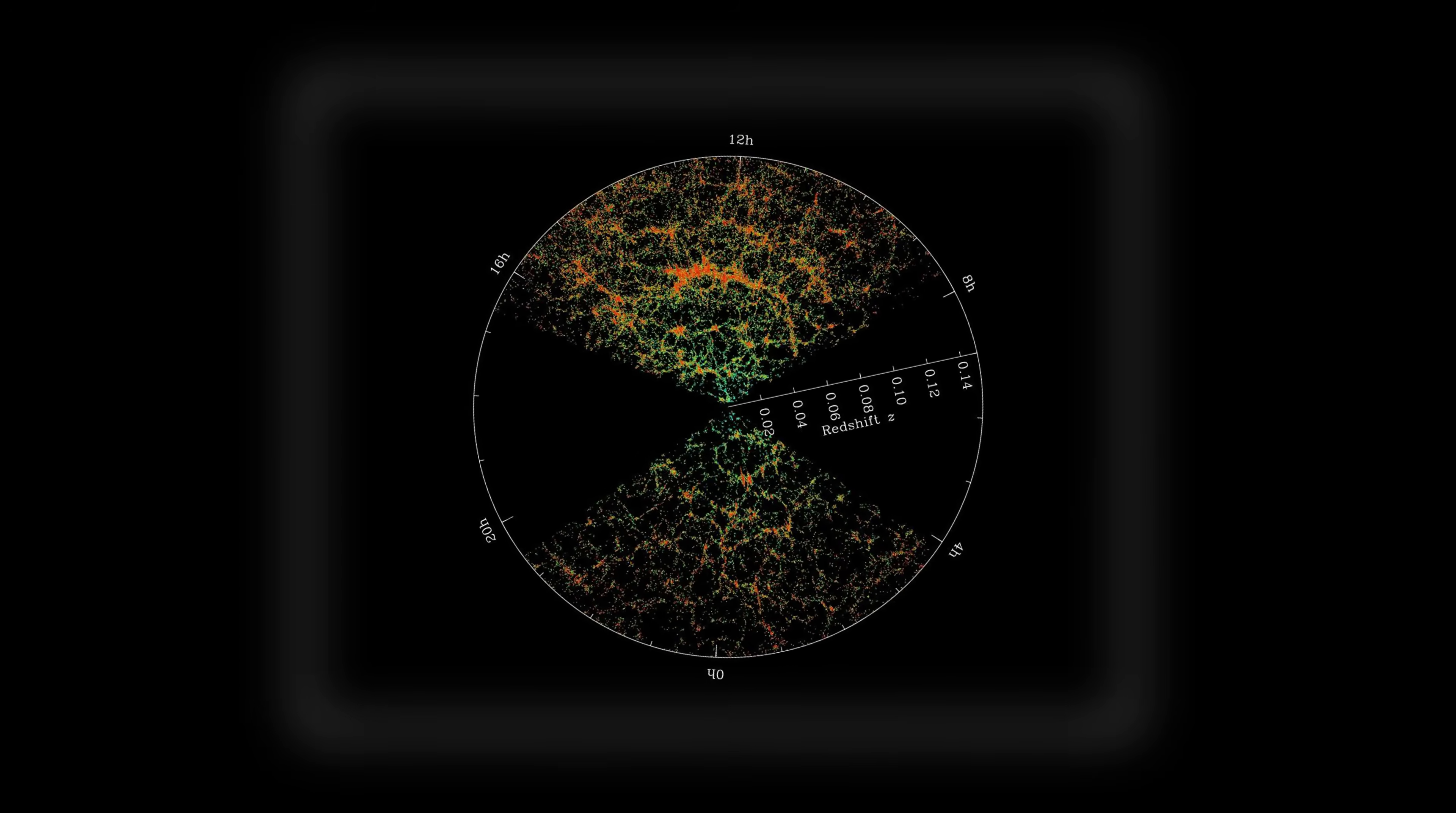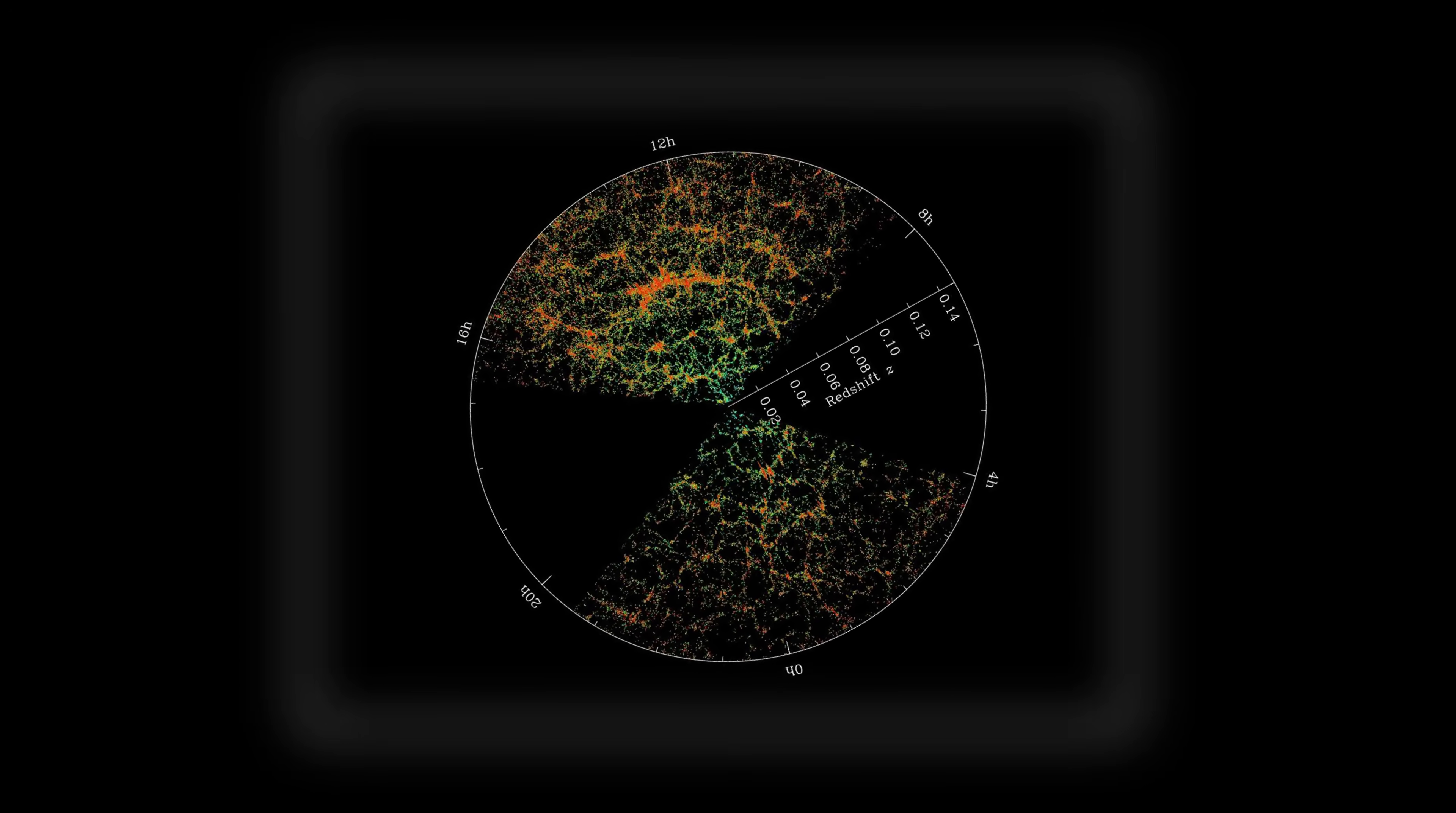By analyzing the light from quasars, astronomers can map the distribution of galaxies and intergalactic matter, revealing the tangled web that binds the cosmos together.